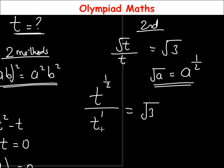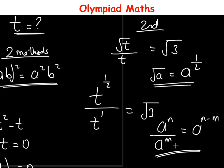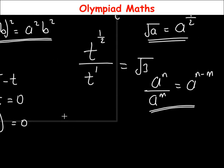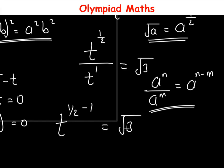To simplify further, we bring in the rule that a^n over a^m equals a^(n minus m). Applying this principle, since we have the same base t, we subtract the powers: t^(1/2 minus 1) equals √3.